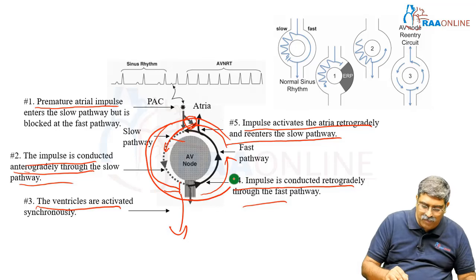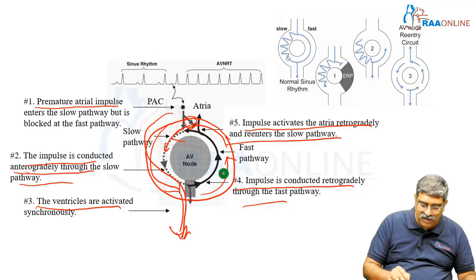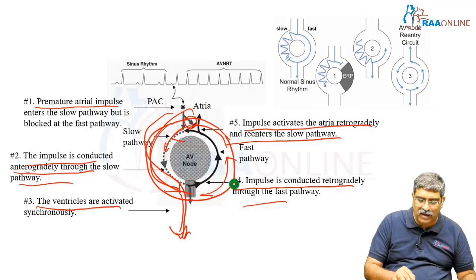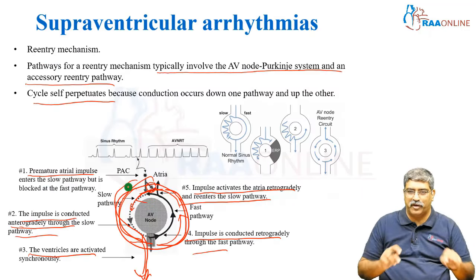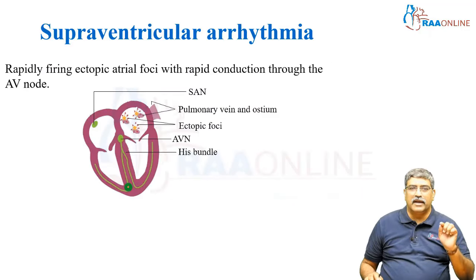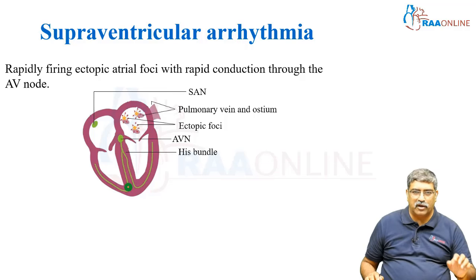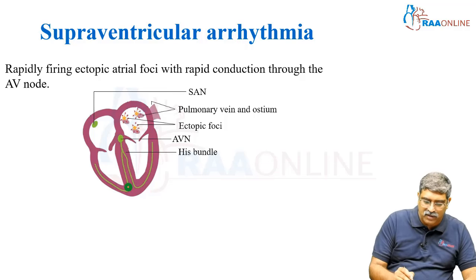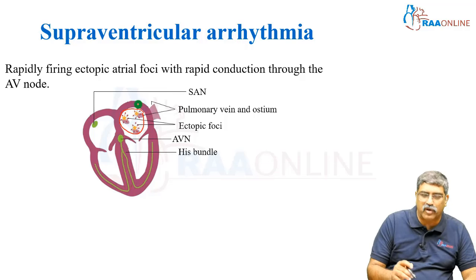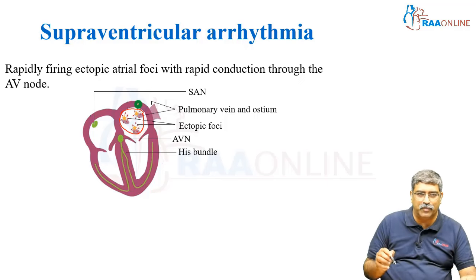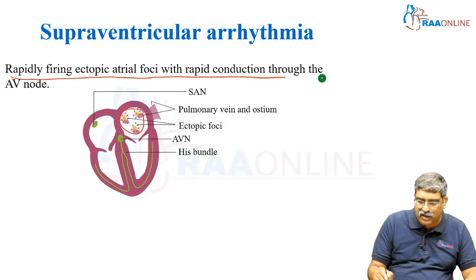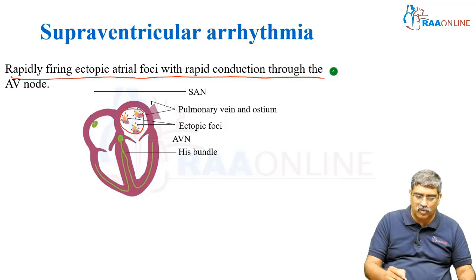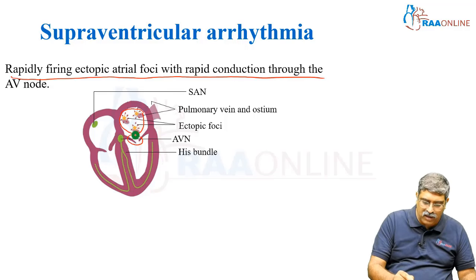The impulse activates the atria retrogradely and reenters the slow pathway. So a reentry pathway goes retrogradely and forms a reentry phenomenon. In case of ectopic atrial foci, there is an ectopic focus which generates the impulse — rapidly firing ectopic foci with rapid conduction through the AV node.